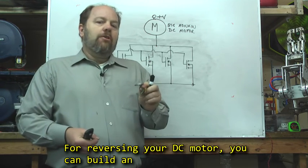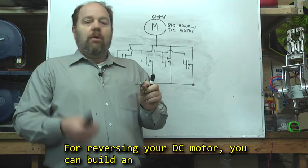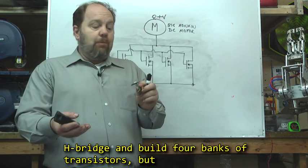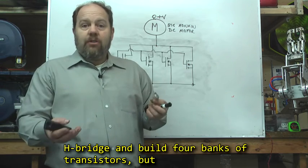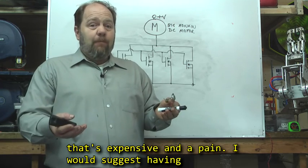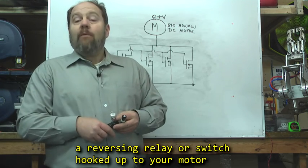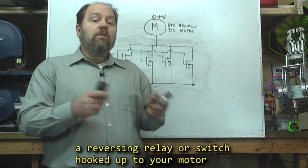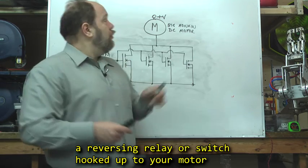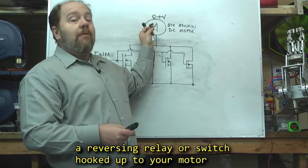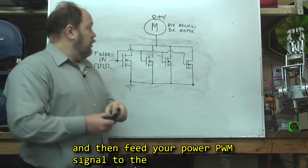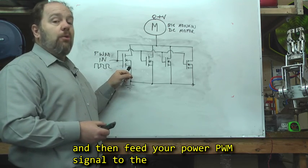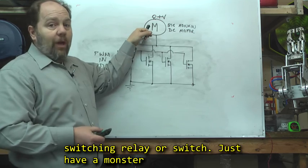For reversing your DC motor, you can build an H-bridge and build four banks of transistors, but that's expensive and a pain. I would suggest having a reversing relay or switch hooked up to your motor and then feed your power pulse width modulation signal to the switching relay or switch.